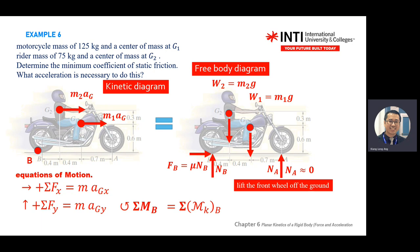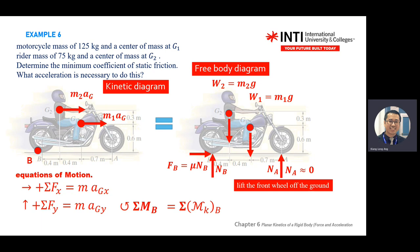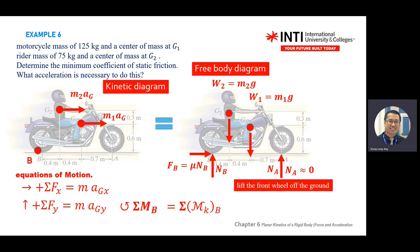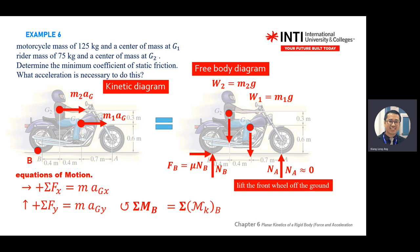Anticlockwise is positive. On the right-hand side, you look at the kinetic diagram — MA is a force. Looking at point B, these terms turn clockwise, so they are negative. You take the force multiplied by its height — 0.6 for one and 0.9 for the other. So for Chapter 6, you need two equations: F equals MA, and the moment equation where all moments from the free-body diagram equal all moments in the kinetic diagram.